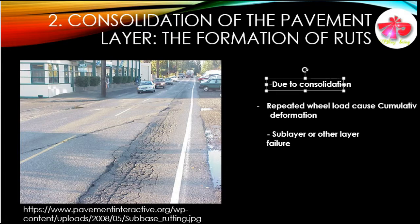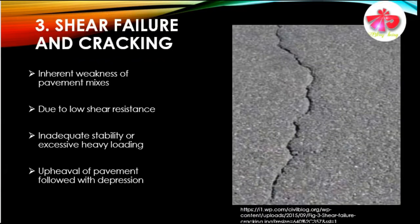The second failure pattern is the consolidation of the pavement layer, that is the formation of ruts. This formation of ruts is mainly due to the consolidation of one or more layers. The repetitive action of load along the same wheel path causes cumulative deformation resulting in consolidation deformation or longitudinal ruts. Rutting on the surface course may be due to wearing along the wheel path, and deformation can be estimated by the depth and width of the ruts.